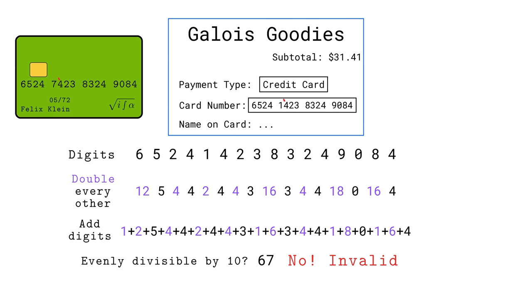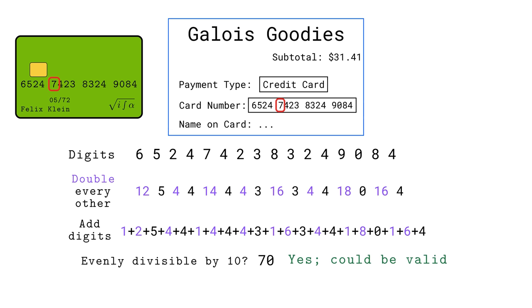The customer rechecks what they type, and oops, this one should be a 7. Repeating the doubling and summation, we get 70, which is divisible by 10, passing the test known as the Luhn algorithm.